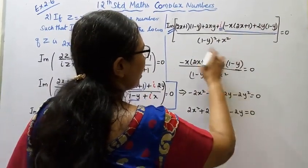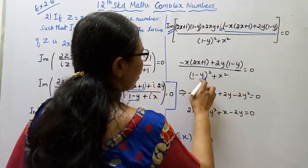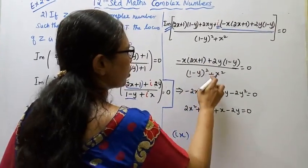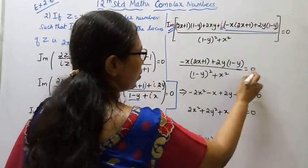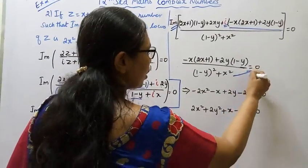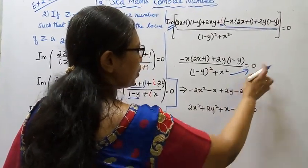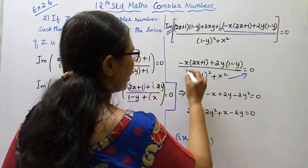Taking the imaginary part and setting it equal to 0: the imaginary part of the expression, divided by (1 minus y) squared plus x squared, equals 0. Taking cross multiplication with 0 on the right side.